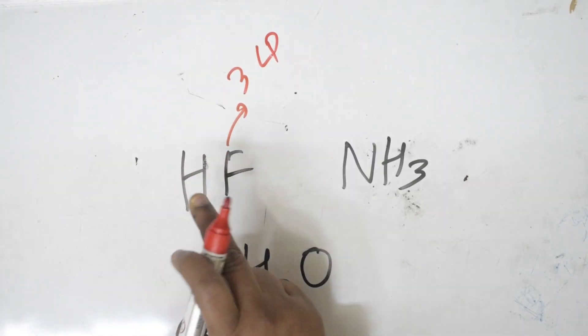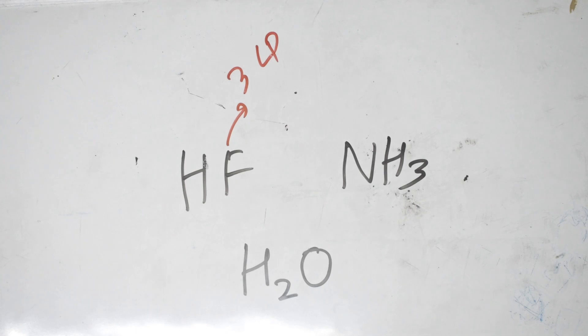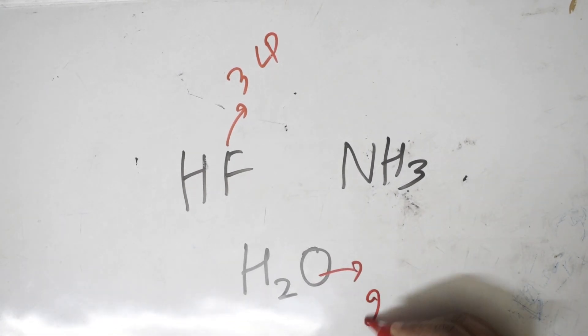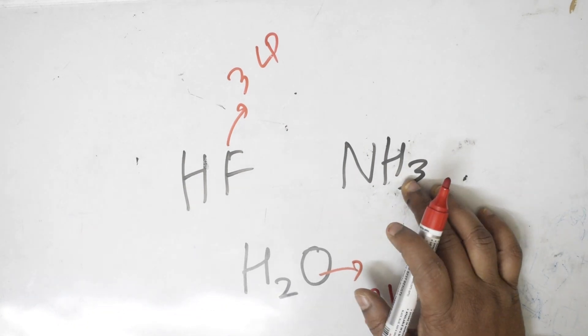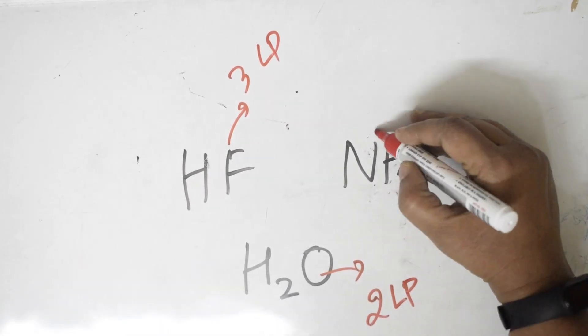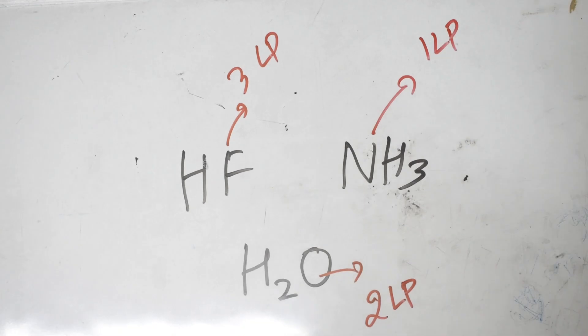If I have to say here, fluorine has how many lone pair of electrons? It has three lone pair of electrons. You know how to count: one, two, three, four, five, six, seven, eight. If I have to speak about oxygen here, how many lone pair of electrons are there? It has two lone pairs. If I take this nitrogen, this particular thing, yes, it has one lone pair.